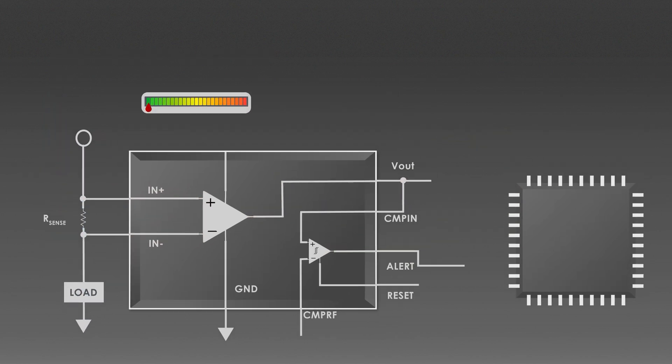For this application, we'll use TI's INA381A1 current sense amplifier, which has an integrated comparator. It monitors the current flowing through a shunt resistor and generates an alert signal when the current exceeds a threshold value.